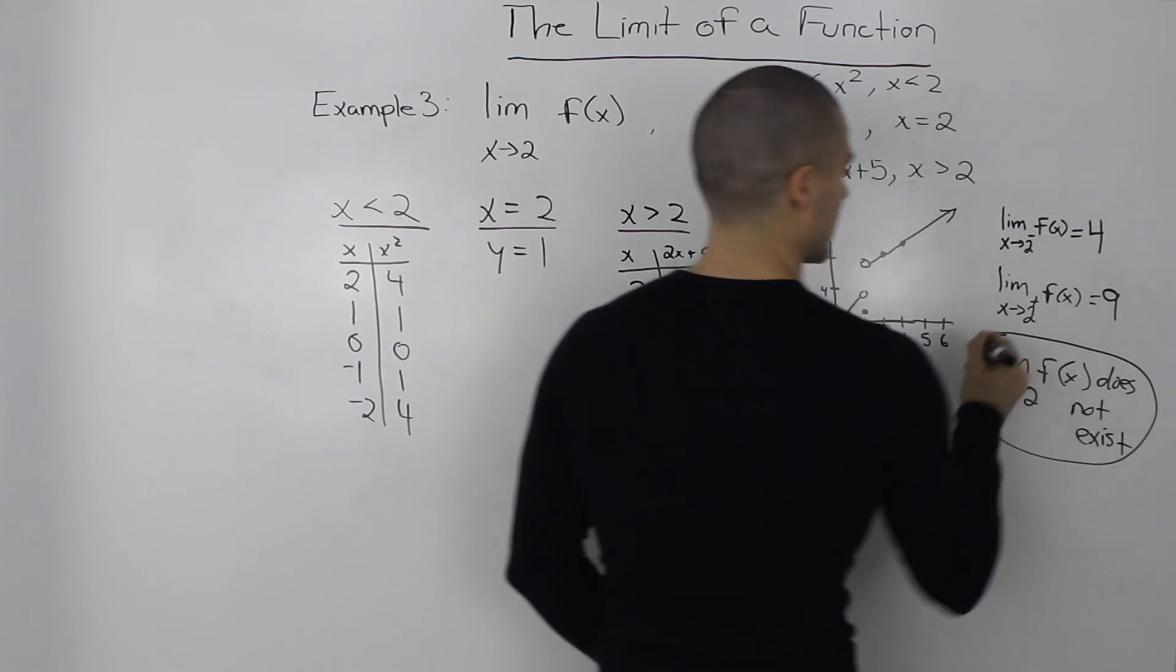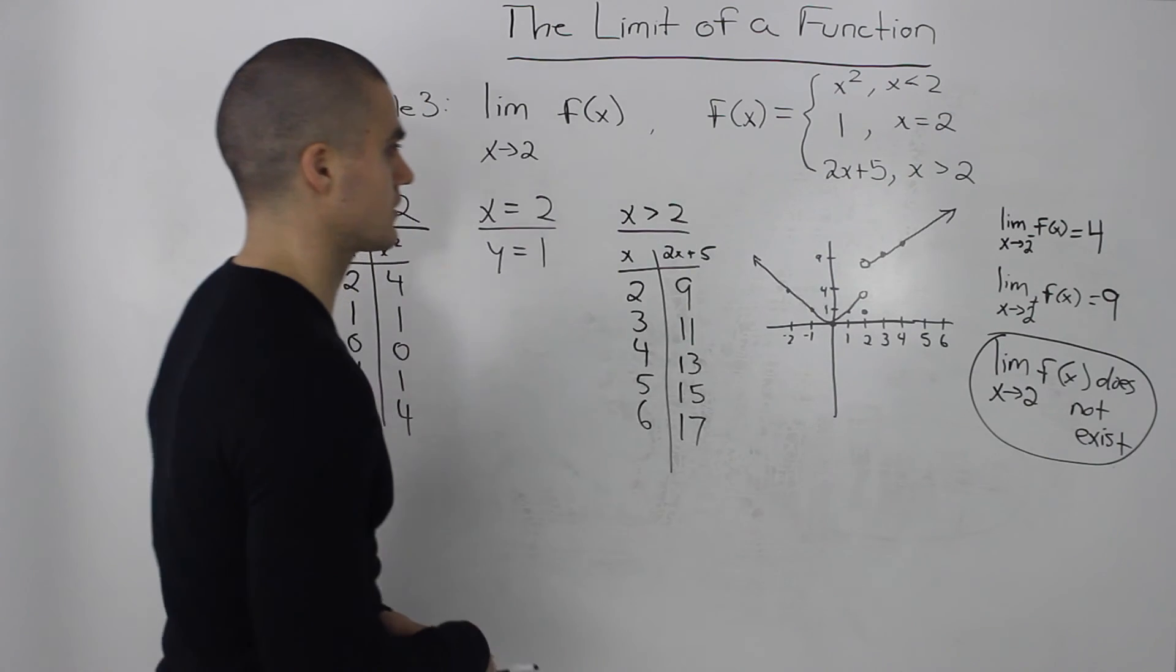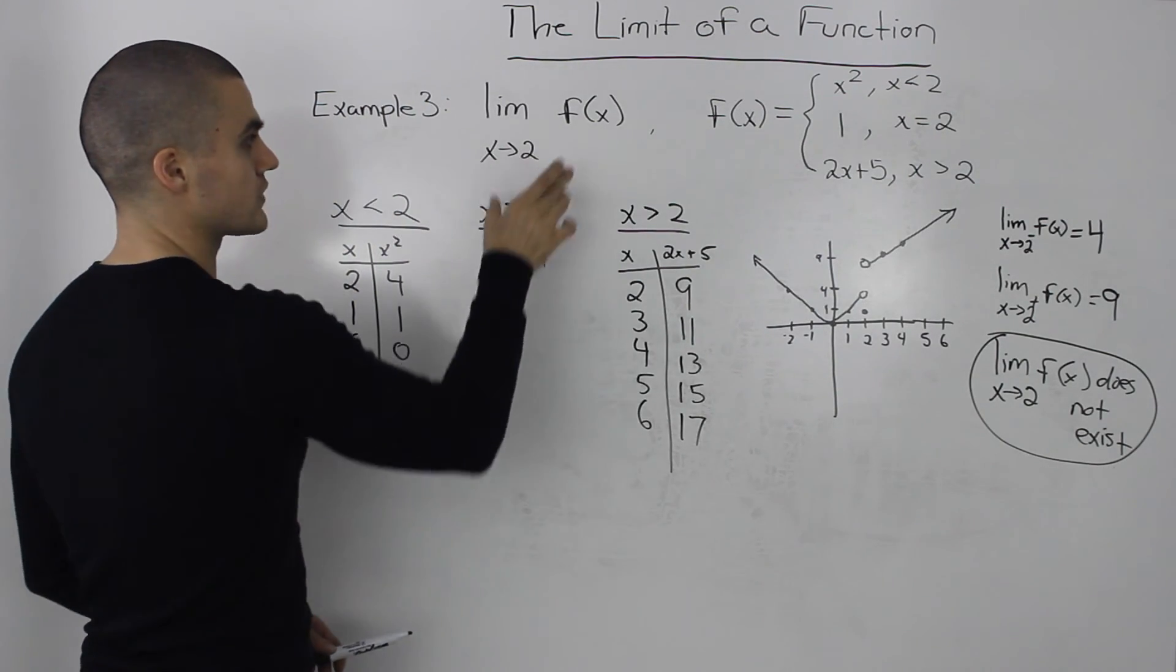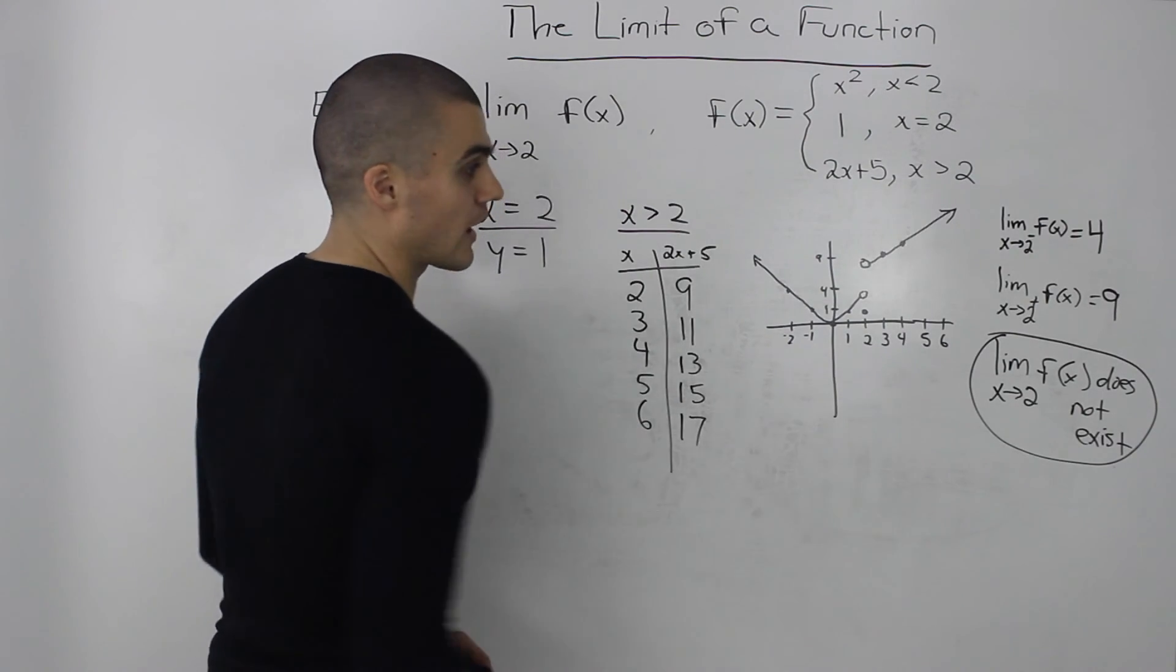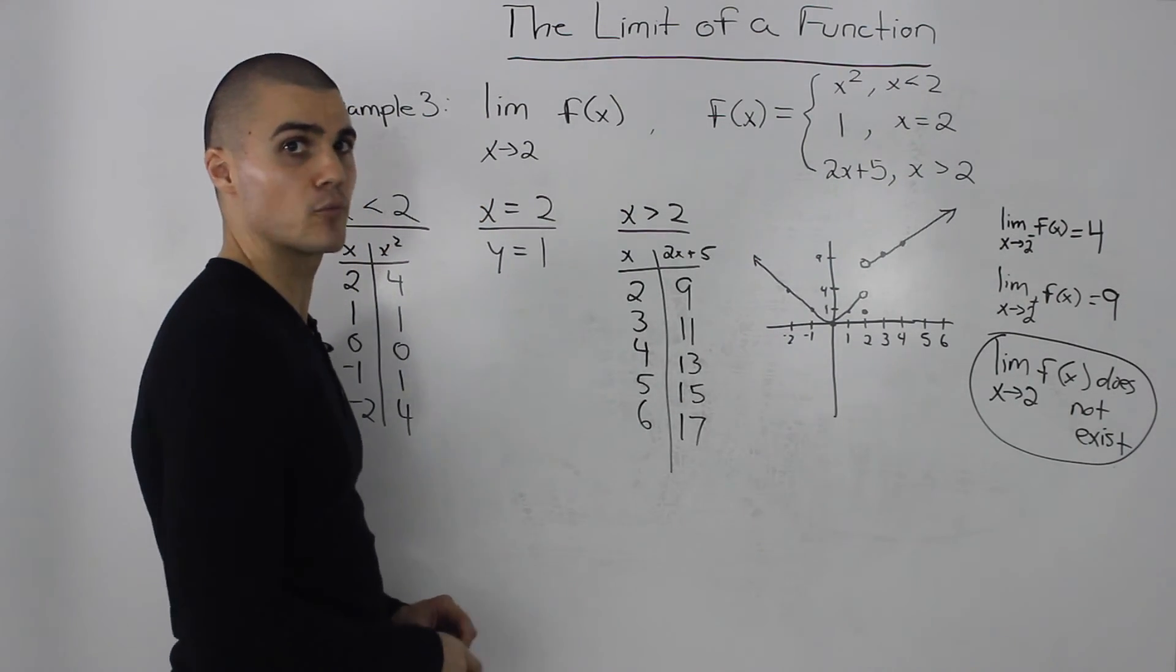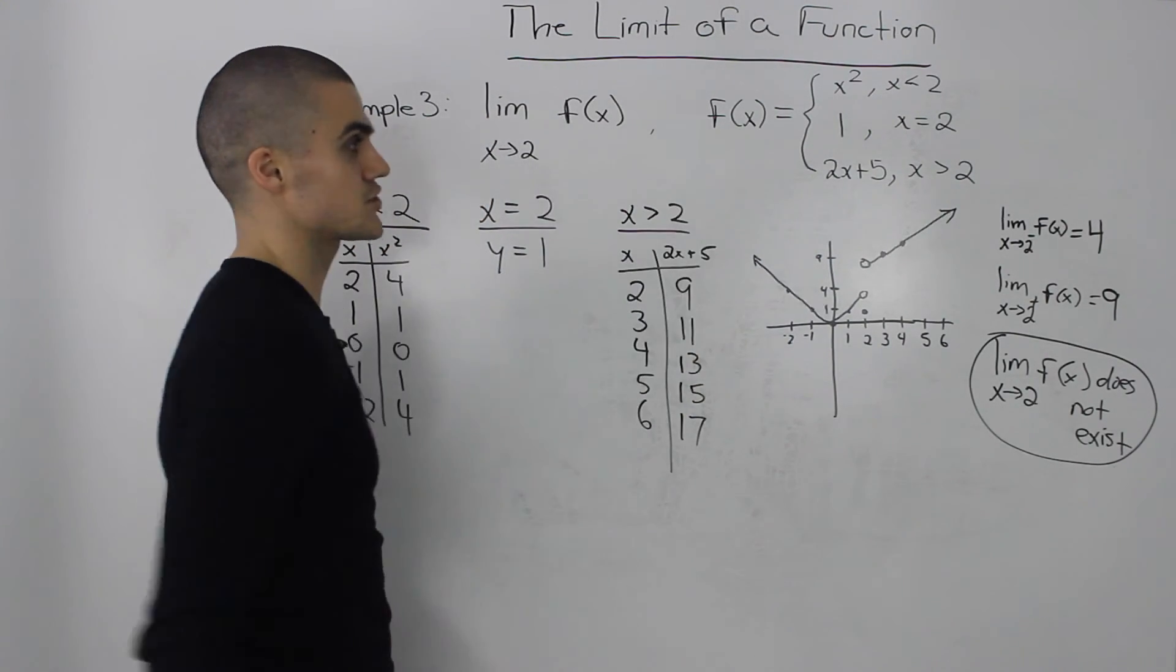And that's our final answer. So notice how in solving this limit we use both tables and then we graph it. I highly suggest you do the same whenever you run into piecewise functions like this.